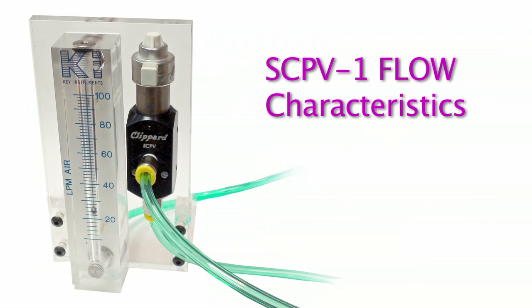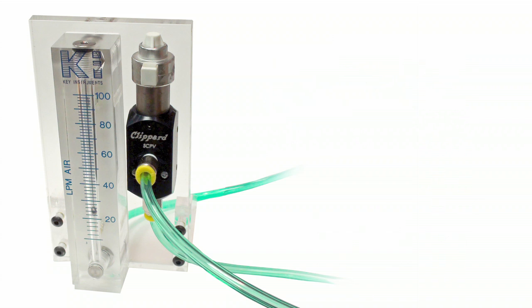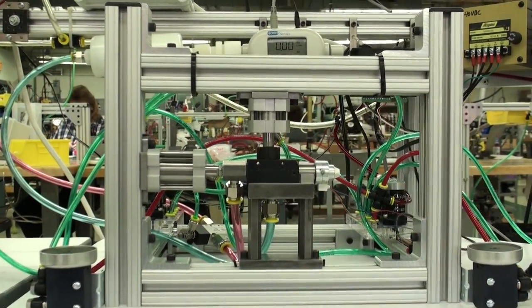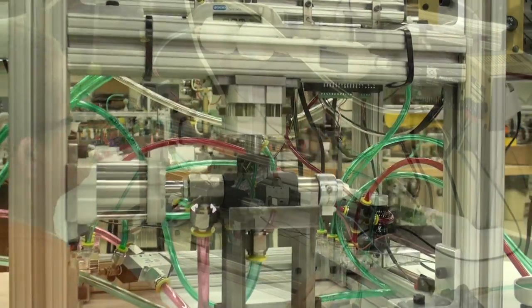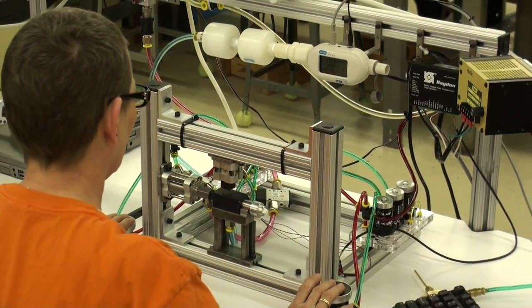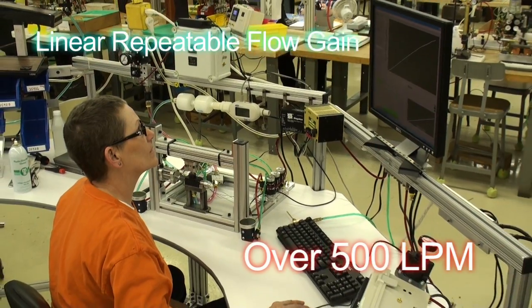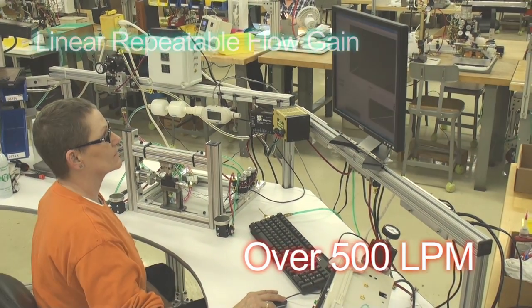Flow characteristics are an obvious decision factor when selecting valves. We have the ability to adjust needle sizes, tapers, and orifice sizes as these parts are all manufactured in-house by Clippard. With this, the SCPV can be customized for extremely linear flow curves with low gain or well over 500 liters per minute.